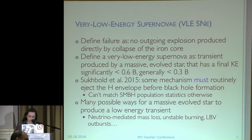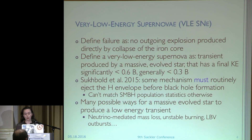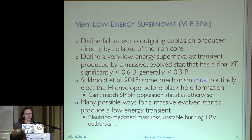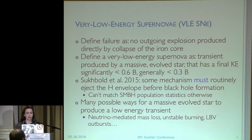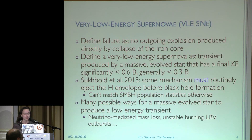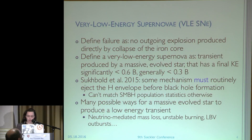To start off with some definitions: we define a failed core collapse as there being no outgoing explosion produced directly by the collapse of the iron core. We therefore define a very low energy supernova as some transient produced by a massive evolved star that has a final kinetic energy significantly below 0.6 beta — 10 to the 51 ergs. Generally, most of these are going to be well below 3 times 10 to the 50 ergs, 0.3 beta.